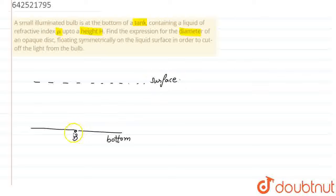Now, this bulb will emit light in all directions. So, if we want to find out the diameter of the opaque disk floating on the surface, let us say this is the disk which is opaque. We have to find the diameter.